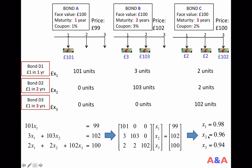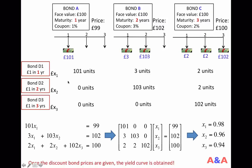These are the hypothetical prices of the discount bonds implied by the prices of the three coupon bonds. Once these hypothetical discount bond prices are obtained, you already know how to get the yield curve from discount bond prices.